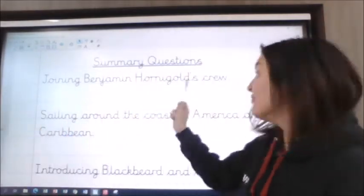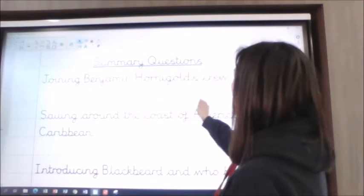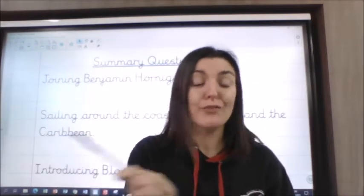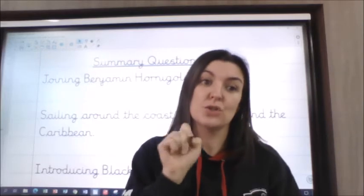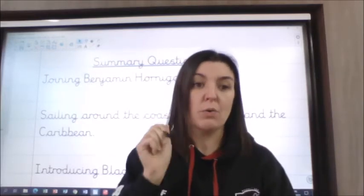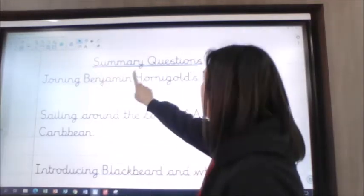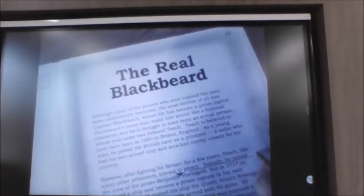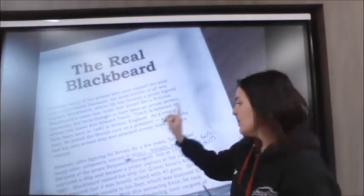Instead of going through all of them, I've put three events to show you how I would do this. What I do is read the sentence — for example, 'joining Benjamin Hornigold's crew' — so I know I'm looking for 'Benjamin Hornigold'. That's my skimming and scanning. When I find it, I put a little star and add something to remind me what that star is for.